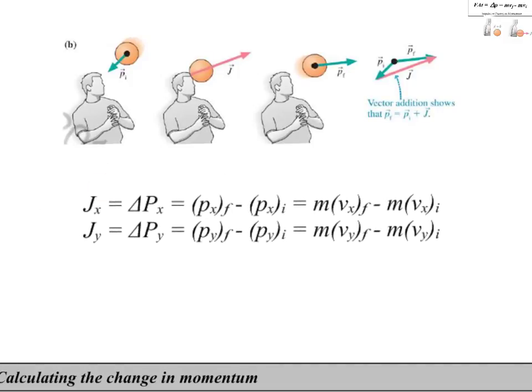So, here the x component of the impulse changes the x component of the momentum. So, we have to look at the x component of the velocity in that case, and here the same thing for the y. So, here the initial momentum of the ball is directed downward to the left. The impulse delivered to it by the player's head upward to the right is strong enough to reverse the ball's motion and send it off in a new direction.